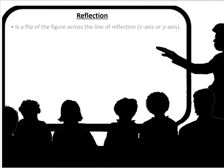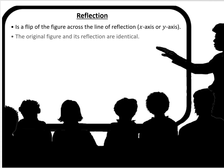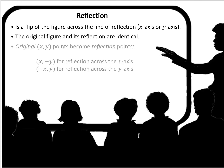Let's review the main points about reflection. It is a flip of the figure across the line of reflection, either the x-axis or the y-axis. The original figure and its reflection are identical. The original (x, y) points become reflection points: (x, negative y) for reflection across the x-axis, and (negative x, y) for reflection across the y-axis.